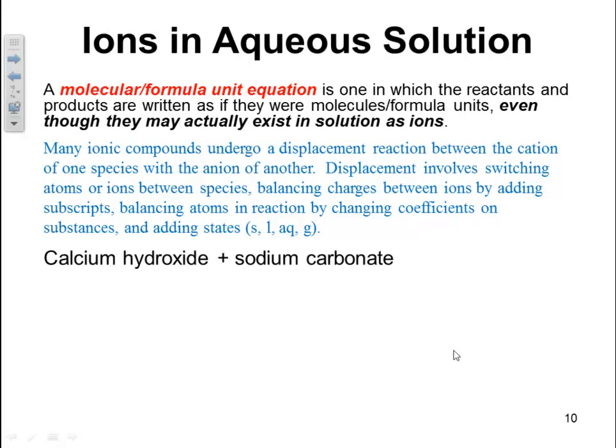Let's look at calcium hydroxide plus sodium carbonate. The first thing you've got to be able to do is write the formulas from the words of the substances. For calcium hydroxide, hydroxide is OH⁻ and calcium is a +2, so we're going to have to put a subscript 2 on the hydroxide. Then for sodium carbonate, sodium is +1 and carbonate is CO3²⁻, so you're going to need 2 sodiums for every 1 carbonate.